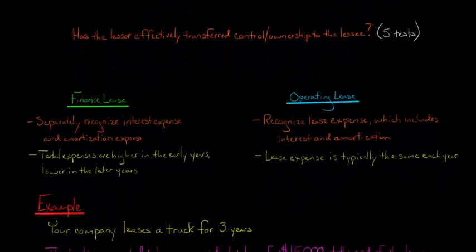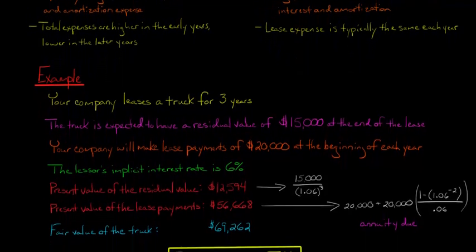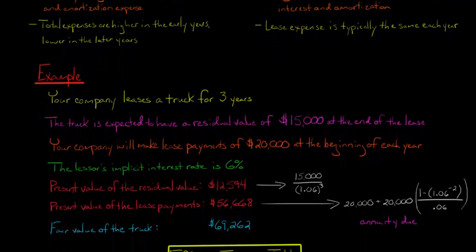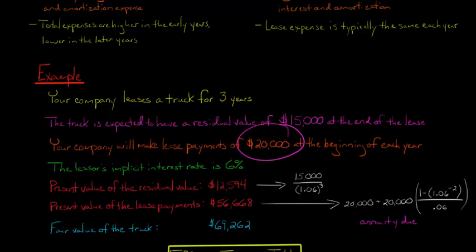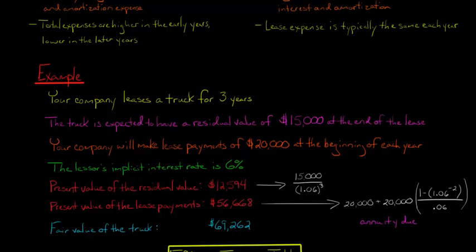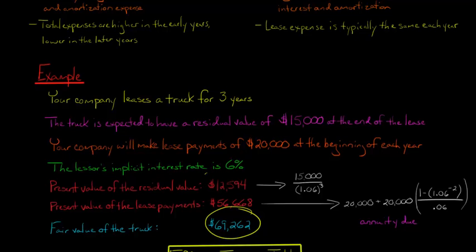Here's an example. Your company is going to lease a truck for three years. The truck is expected to have a residual value of $15,000 at the end of the lease. Lease payments are $20,000 at the beginning of each year — an annuity due. Using the lessor's implicit interest rate of 6%, the present value of the residual value is $12,594, and the present value of the lease payments is $56,668. Adding those together gives a fair value of $69,262.